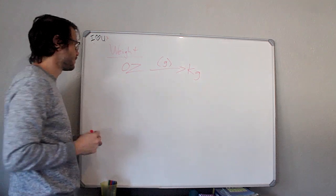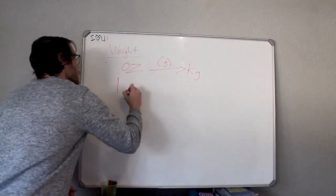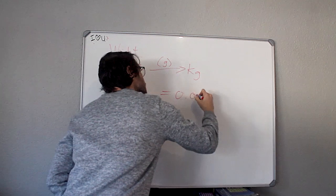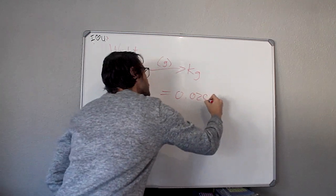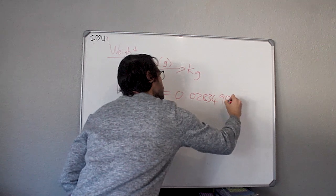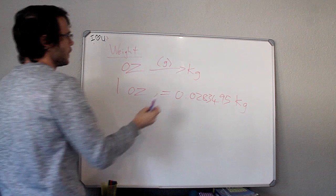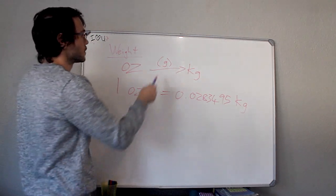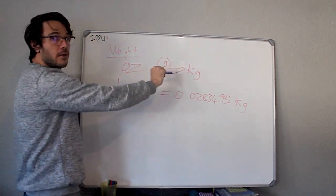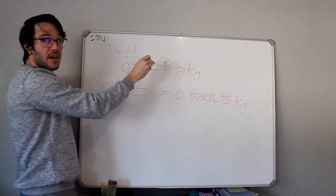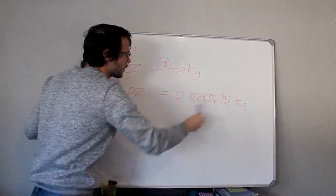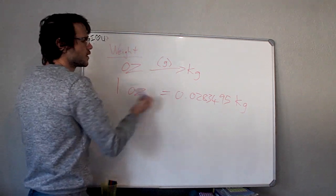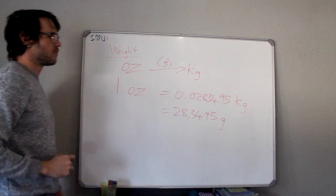One ounce is equals to 0.0283495 kilograms. But if you remember that there's a 10 to the power 3 relationship between grams and kilograms, a gram needs to be divided by 10 to the power 3 to give you a kilogram value. Kilogram needs to be multiplied by 10 to the power 3 to give you a gram value. So if we have a kilogram value, we multiply by 10 to the power 3, which means we shift three decimal places to give you a gram value: 28.3495 grams.